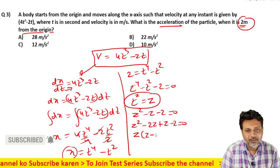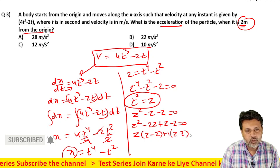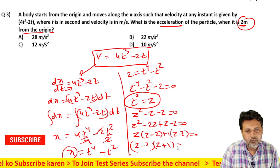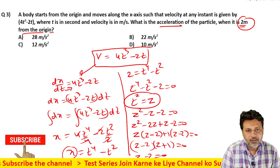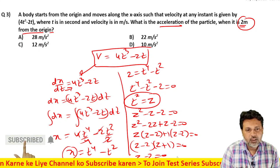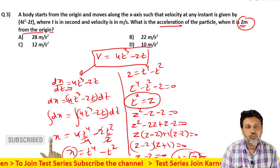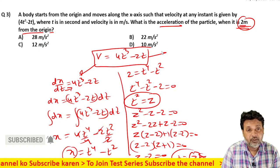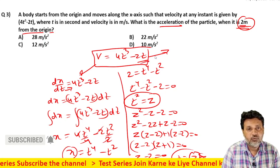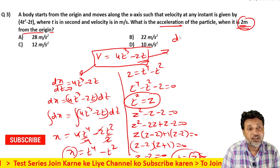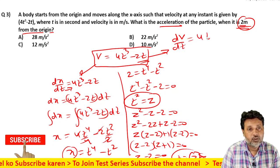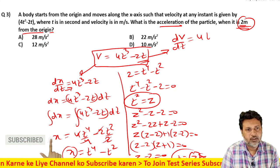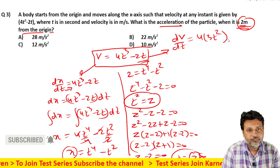इसको factor करते हैं: z(z minus 2) + 1(z minus 2) = 0, यानि (z minus 2)(z plus 1) = 0. तो z = 2, यानि t² = 2, तो t = √2 second. Root 2 second में object origin से 2 meter पहुंच जाएगा। अब इसका acceleration निकालते हैं — velocity equation को time के respect में differentiate करें।